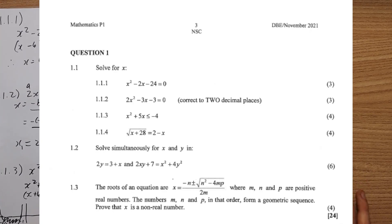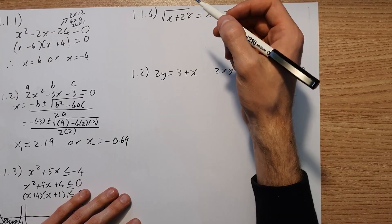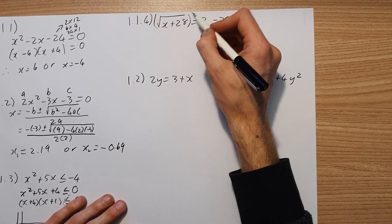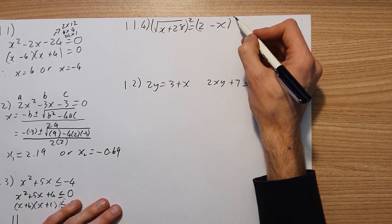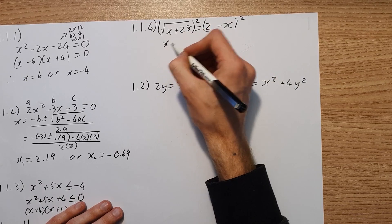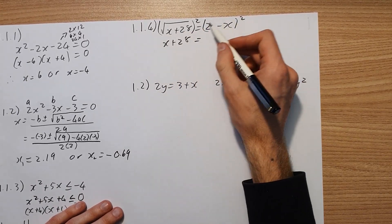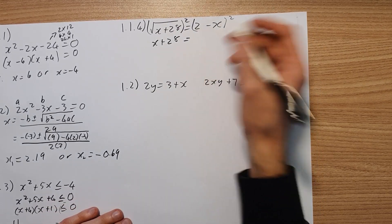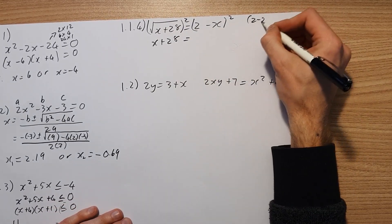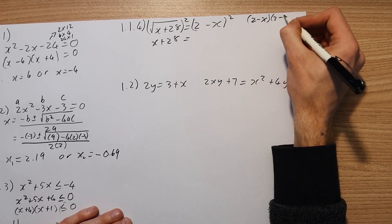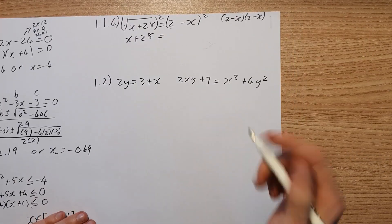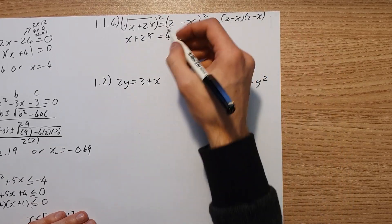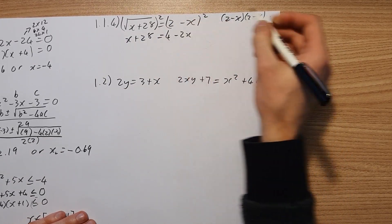Question 1.1.4: we're dealing with a square root, so the first thing we do is square both sides to get rid of the square root. So we have x plus 28 equals 2 squared. Now I'm going to factorize the right side: we have 2 minus x, 2 minus x — that's technically what we have. So 2 times 2 is 4, 2 times minus x is minus 2x.